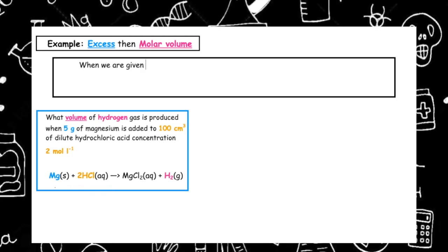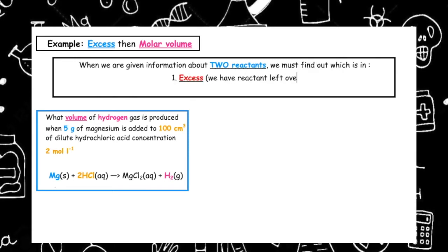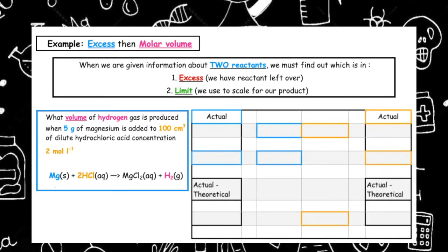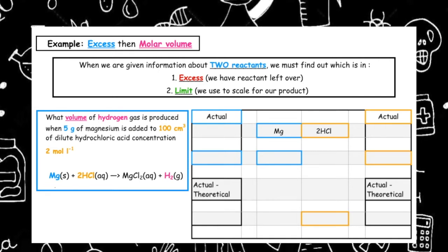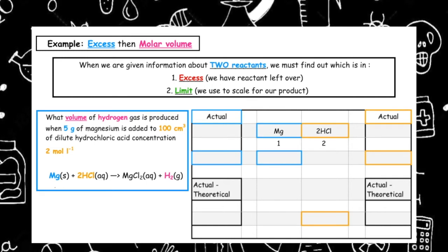When we are given information about two reactants, we first must find out which one is in excess and which one is our limiting reagent. The first thing we take from our balanced equation are our reactants: magnesium (Mg) and 2HCl (hydrochloric acid). We then do the mole ratio, which is a 1 to 2 ratio.